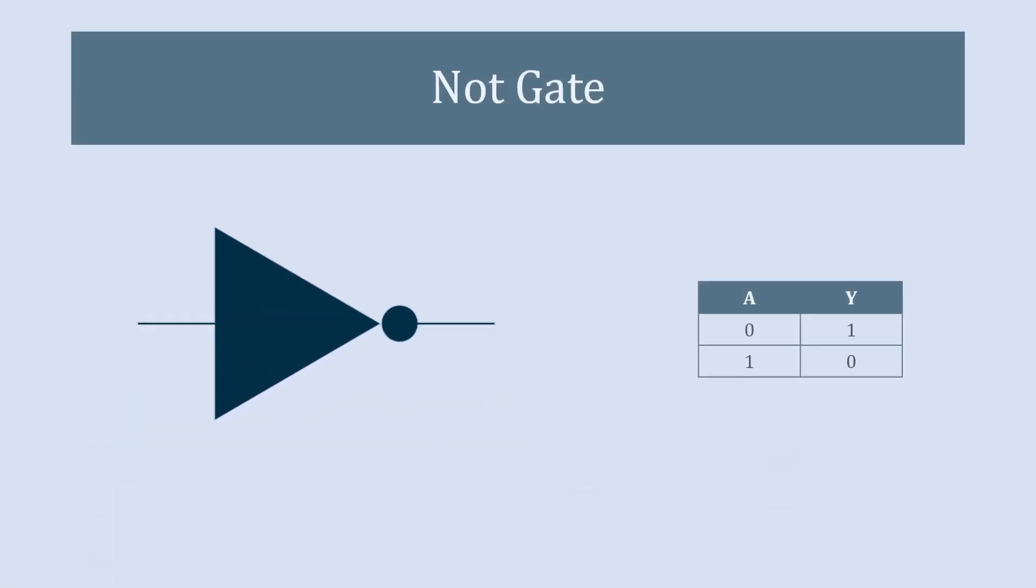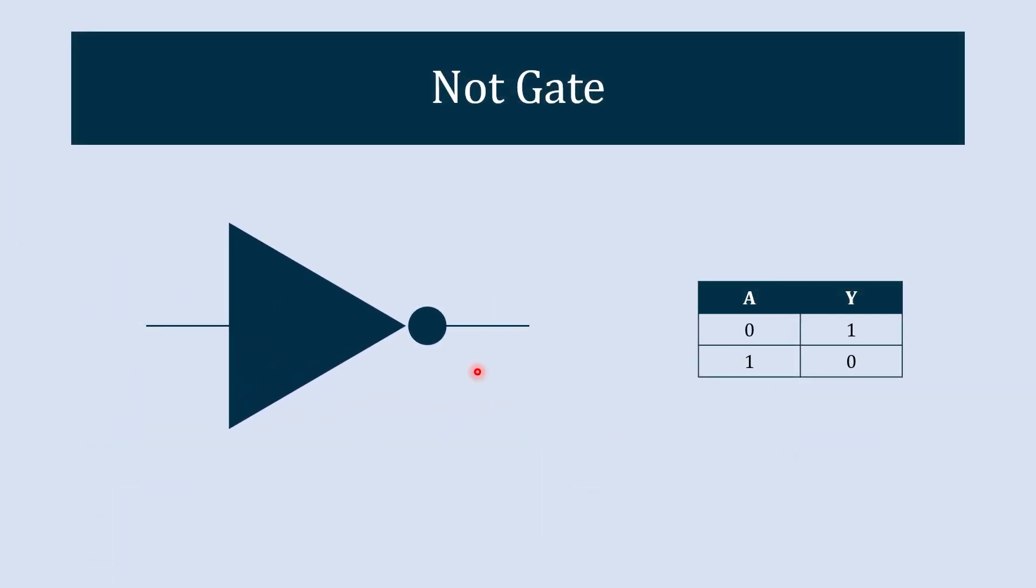So first we'll start with the NOT gate. Basically, this NOT gate is also known as the inverter gate. It just inverts whatever input you give.